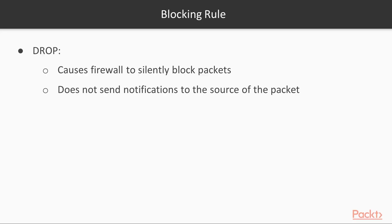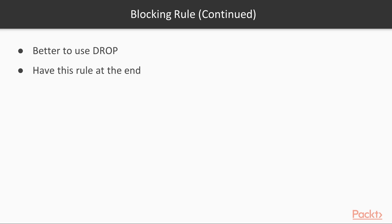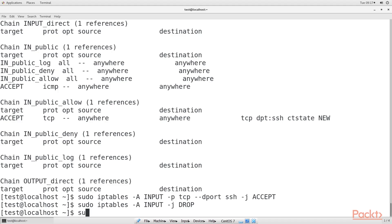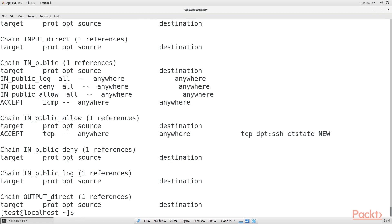There are two ways to write that final blocking rule. Using drop causes the firewall to silently block packets without sending any notification back to the source. The second way is to replace drop with reject, which also blocks packets but sends a message back to the source about the fact that the packets have been blocked. In general, it's better to use drop, because we want to make it harder for malicious actors to figure out our firewall configuration. Either way, always place this rule at the end of the chain, because any allow rule that comes after it will have no effect.